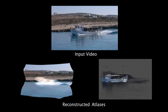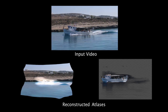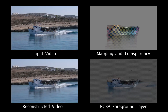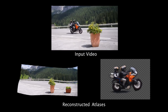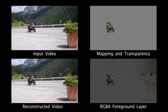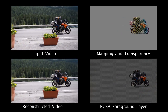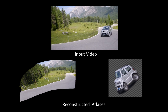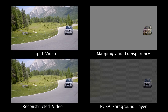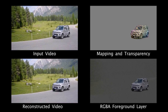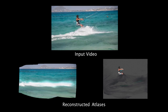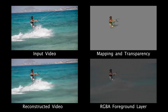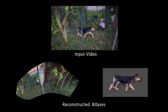Here we show some example decomposition visualizations. In each case, we start with the learned atlases, followed by the input video, a visualization of the mapping and transparency, and the reconstructed video. We can see that in cases where the atlases are reconstructed well, the mapping generally tracks with the object as it moves through the video. Additionally, while the input coarse masks were obtained using automatic Mask R-CNN segmentation, the decomposition includes secondary effects such as shadows and fine details at the borders.